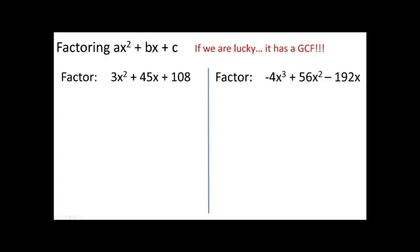For example: 3x squared plus 45x plus 108. If we're lucky and get a trinomial like this, it will have a GCF. Fortunately, all three terms have a greatest common factor of 3 that I can pull out. This is the best case scenario, because once I pull out the 3, what I'm left with is a quadratic trinomial that looks just like the ones from last night's homework — and we can do this the exact same way we've been doing all along, just hanging on to the 3 on the outside.